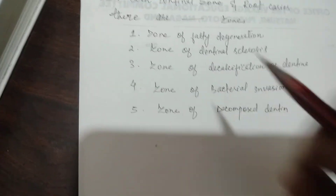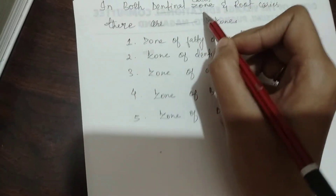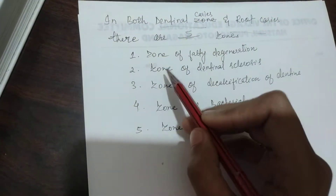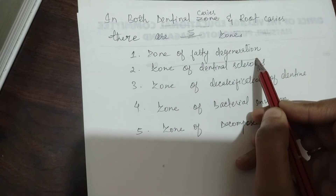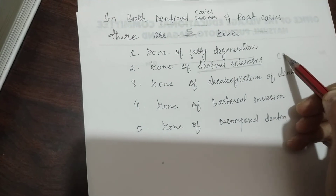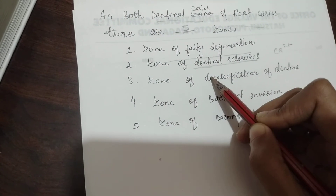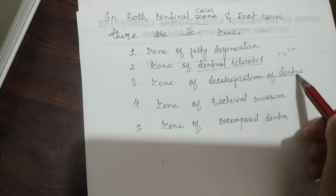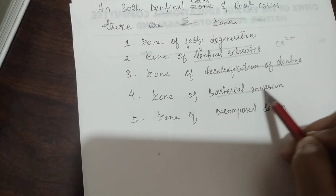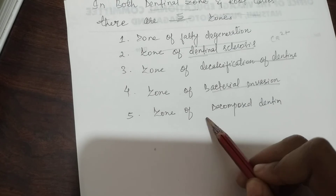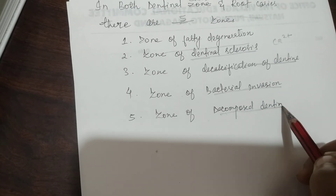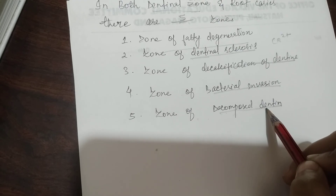In dentinal caries and root caries, there are five zones. The first zone is the zone of fatty degeneration, and the second is the zone of dentinal sclerosis, in which calcium gets deposited. The third is the zone of decalcification of dentin. The fourth zone is called the zone of bacterial invasion. And the fifth and last zone is called decomposed dentin.